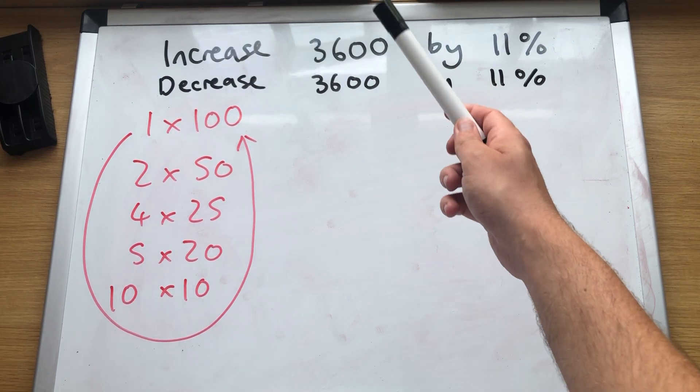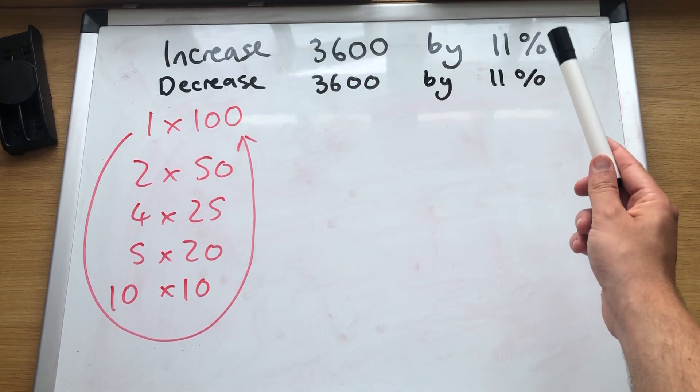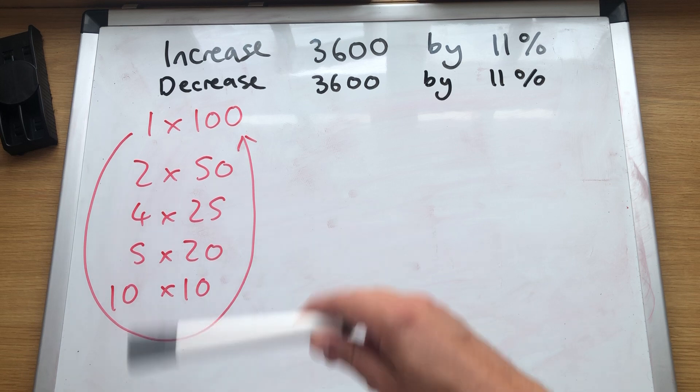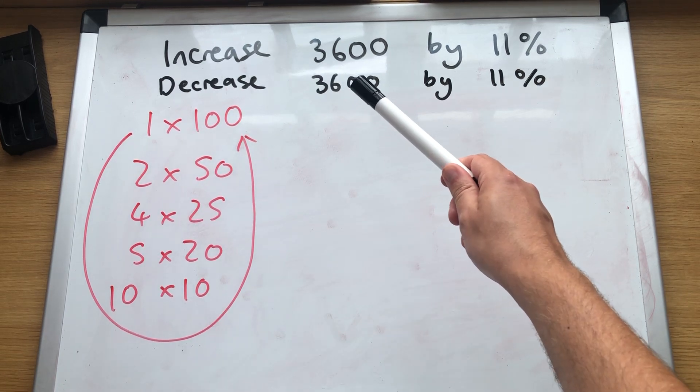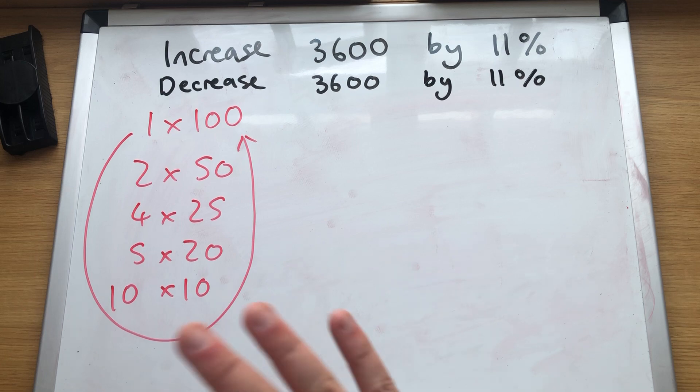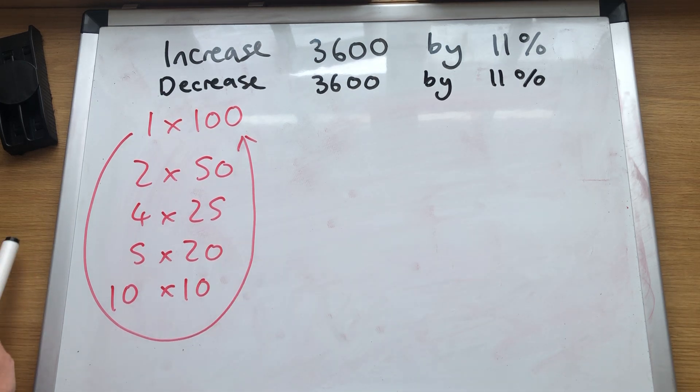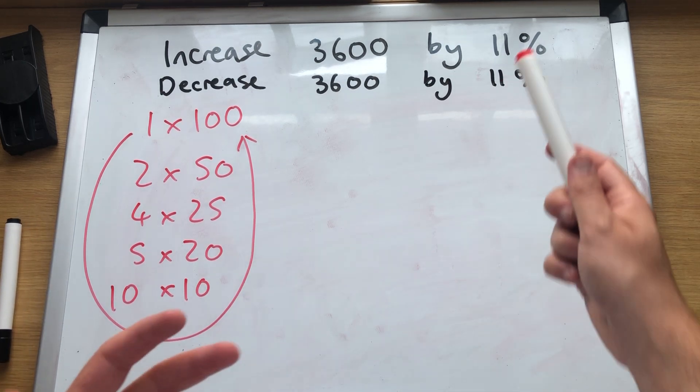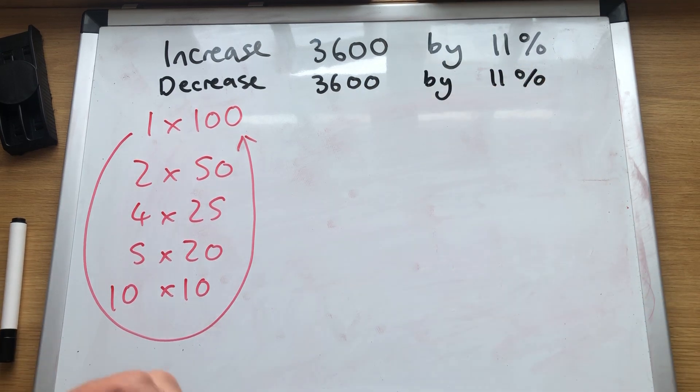If it's increase you need to do 3600 plus 11%, decrease 3600, take away 11%. So really the only difficult bit is knowing how to find 11% of 3600.